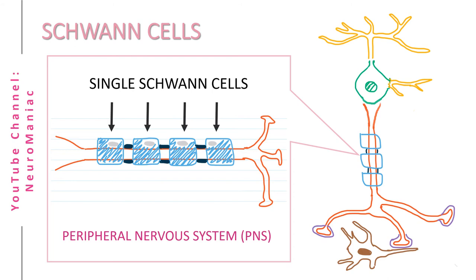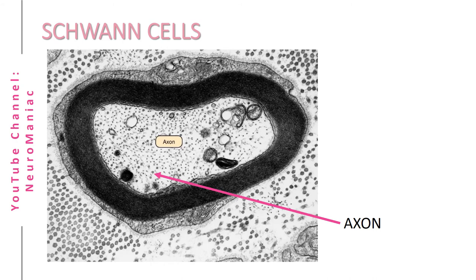...to label the myelin sheath on an electron micrograph. Can you guess where it is? Now if I told you this image is from the peripheral nervous system, then would this cell be a Schwann cell or an oligodendrocyte? Hope you said the Schwann cell!